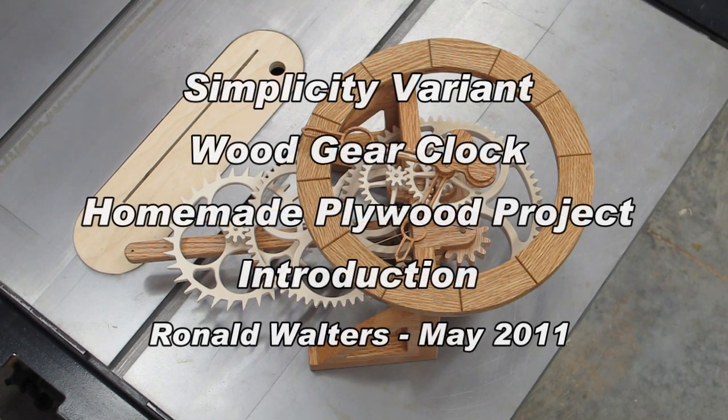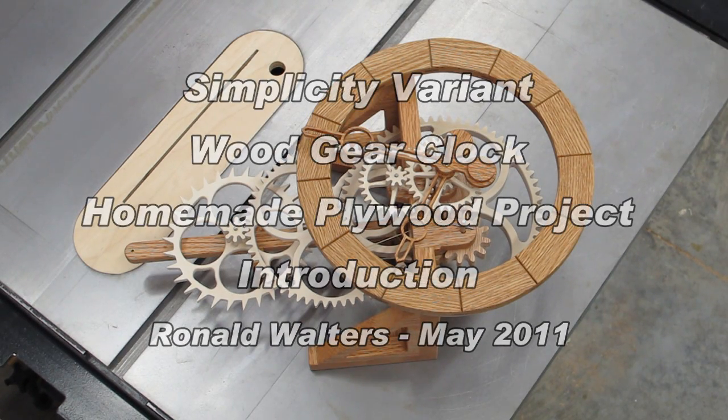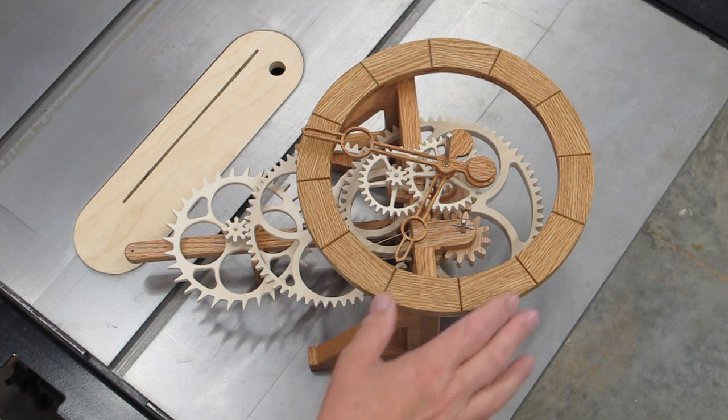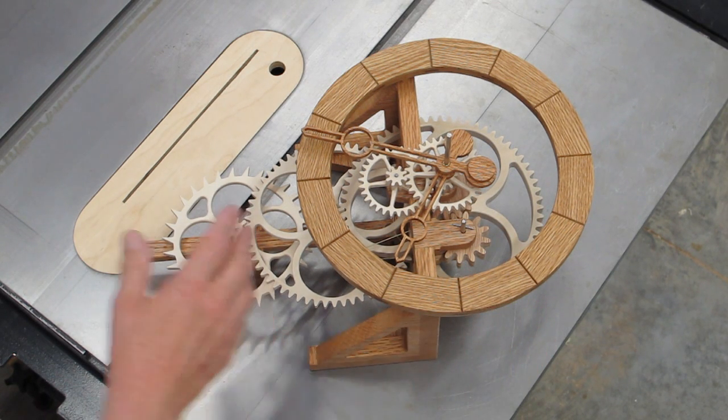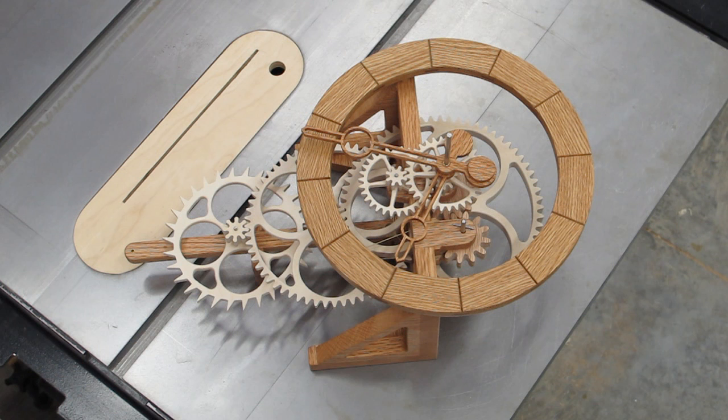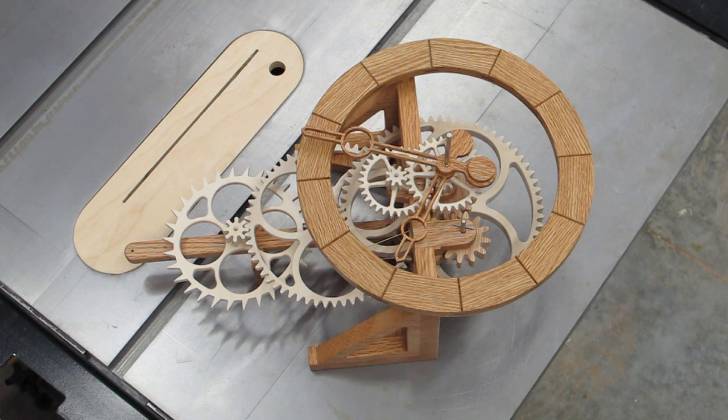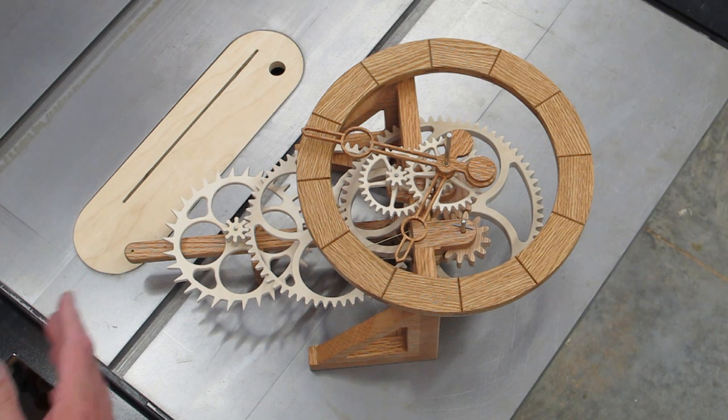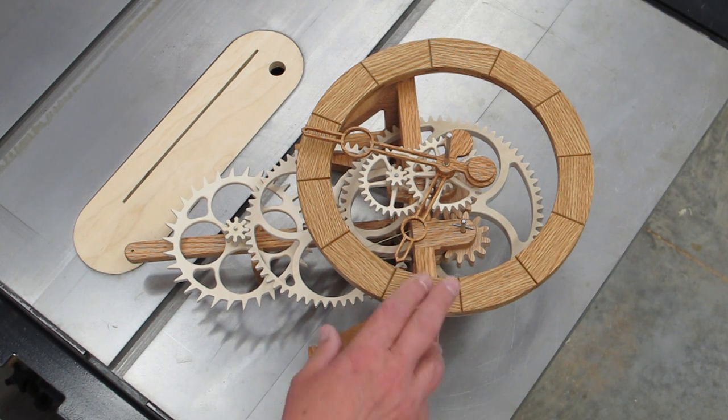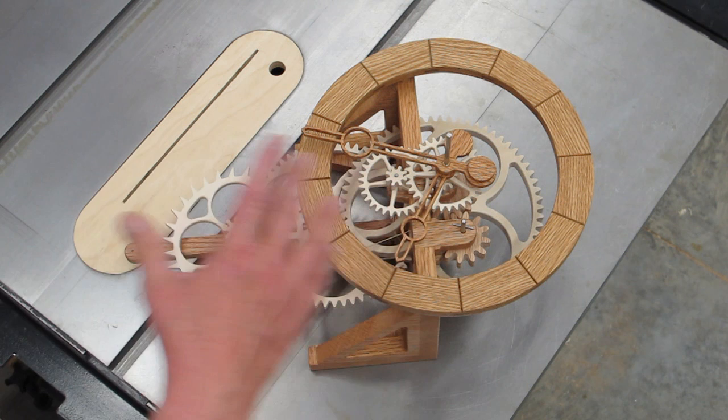When I made my second version of the Simplicity, or the Variant, my clock face, base, pendulum, bob, and everything is made out of red oak. The gears, including the two wind-up gears, were all originally Baltic birch. Personally, I didn't like that white gear against this wood. I wanted to try and make them all the same color.